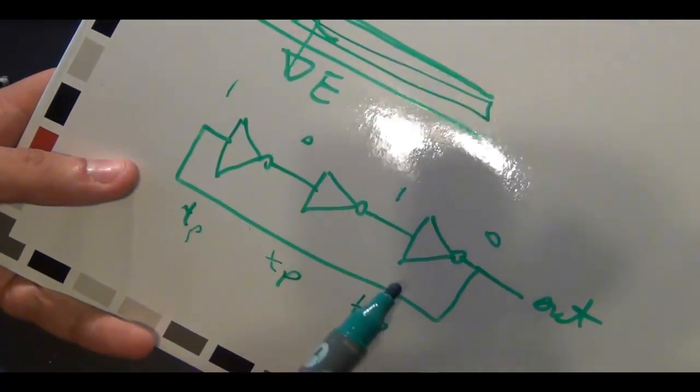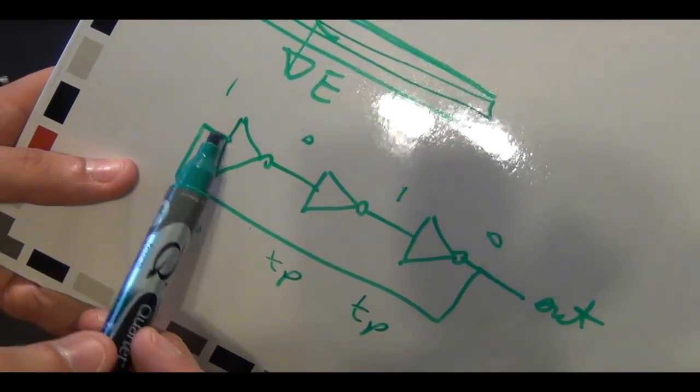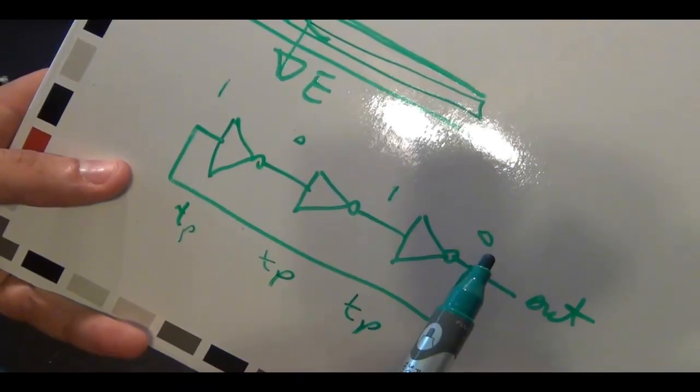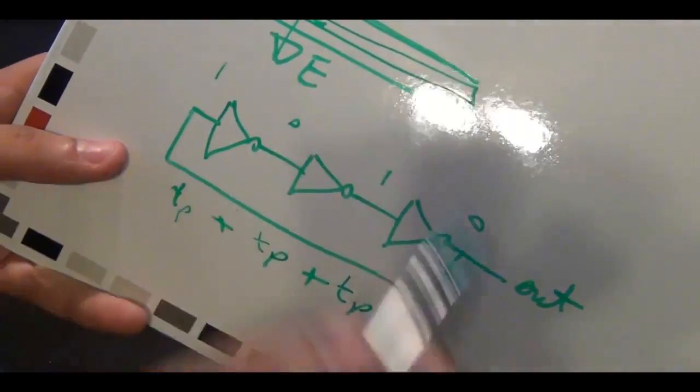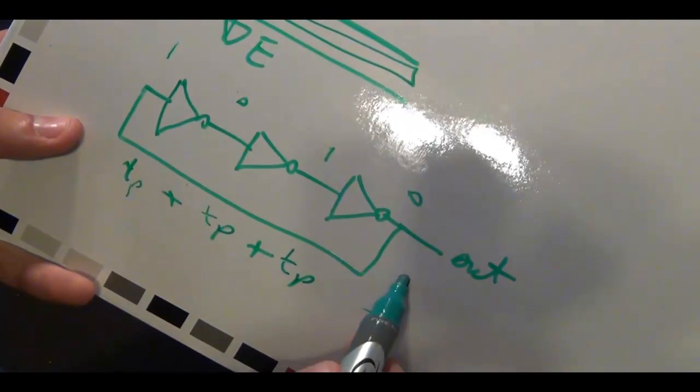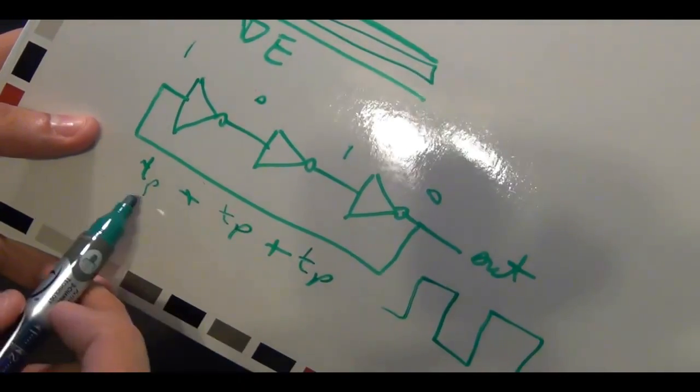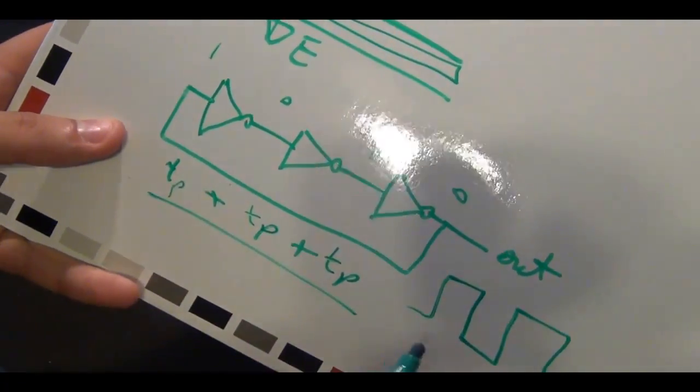Each of them have a propagation delay through them. So, if this is a start-up position, and the 0 arrives at the input, by the time this 0 becomes a 1 again, and goes all the way to the output, it will take some time, which is tp plus tp plus tp. So this guy will oscillate, producing approximately a square wave at its output, whose period is proportional to the delay through these inverters. So that's all I've built.